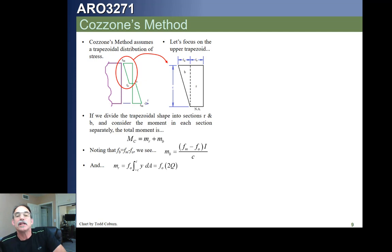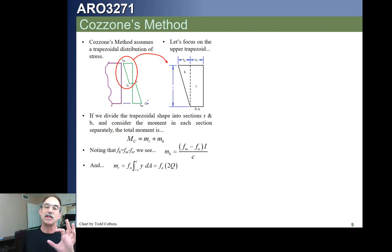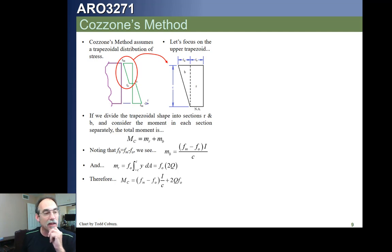If we look at the rectangular piece, this is kind of like the elastoplastic moment, but with a value of Fo instead of Ftu. We can take that stress Fo and sum it up across the Y·dA's. We see that Y·dA is just twice Q, because we've got Y times Q above the neutral axis and Y times Q below. So it's just Fo times two times the first moment of that area, where that area is just half the section. The total moment is the summation of these two values: (Fm minus Fo) times I over C plus 2·Q·Fo.